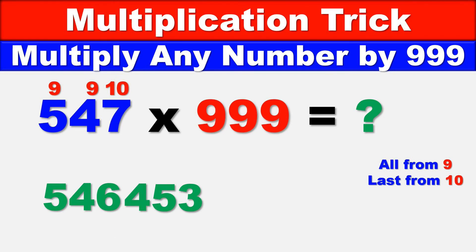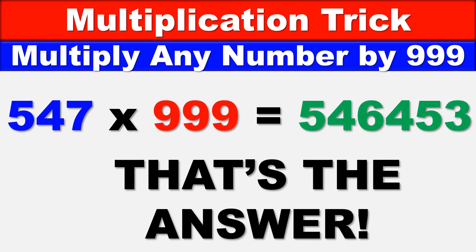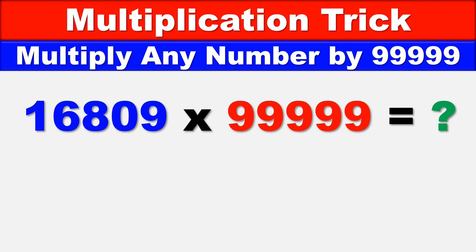Let's take a look at our final example: 16,809 times 99,999. At first this seems very daunting, but I'll show you how we can easily do this. It works the same way. First, subtract by 1, so you have 16,808 - that's the first part of your answer. The second part is again all from 9, last from 10.